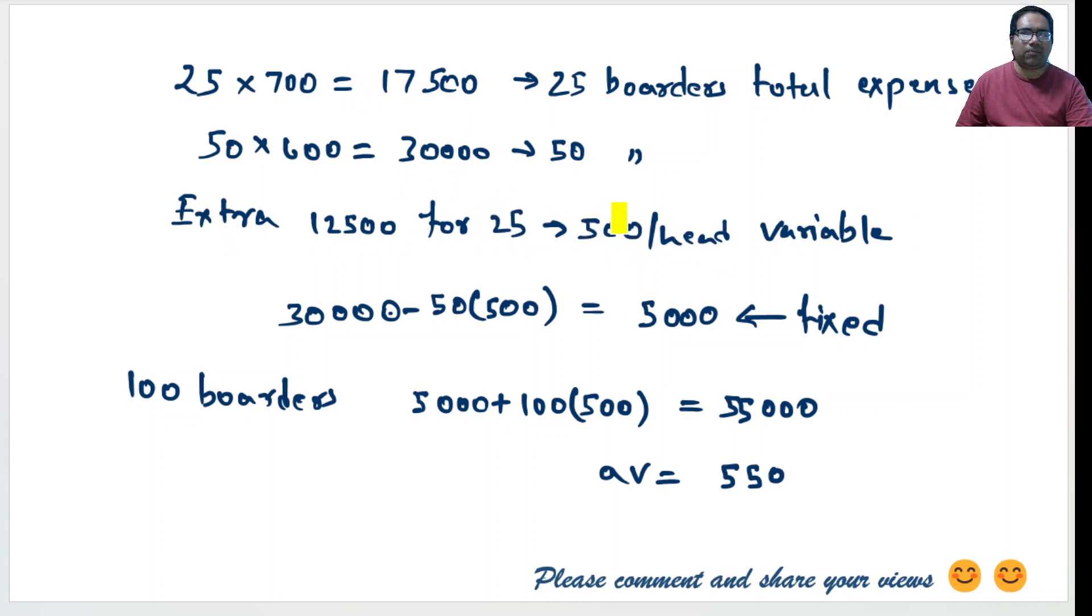When it is 500 variable, what does that mean? 50 people, if they take 500 variable, 50 into 500 is 25,000 and total is 30,000. That means 30,000 minus this 25,000, this 5,000 should become fixed cost for everyone.